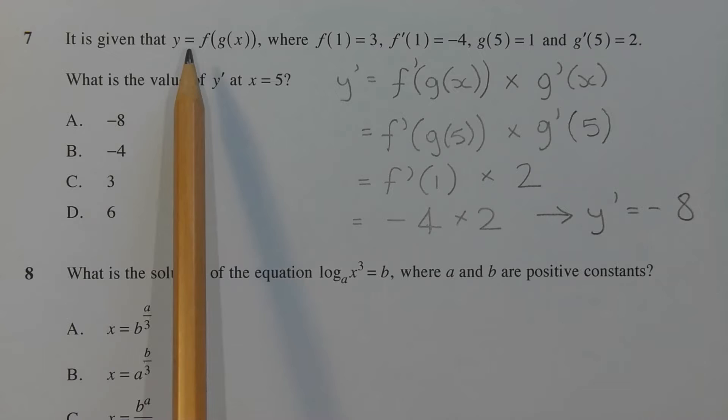Question 7. Y equals f of g of x is a composite function. So in order to differentiate a composite function, the chain rule needs to be applied. The way it works is we differentiate the outer function, which is f, and multiply that by the derivative of the inner function, which is g.